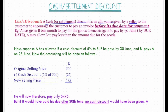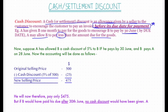A cash discount, or settlement discount, is an allowance given by a seller to the customer to encourage the customer to pay an invoice before its due date. A has given B one month to pay for the goods. To encourage B to pay by 30th June, A may allow B to pay less than the amount due. Suppose A has allowed B a cash discount of 5% if he pays by 30th June, and B pays by 20th June, so cash discount is applicable.